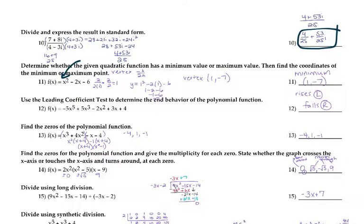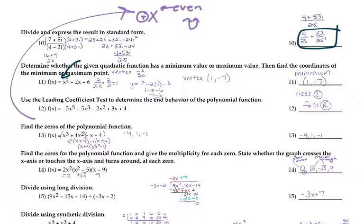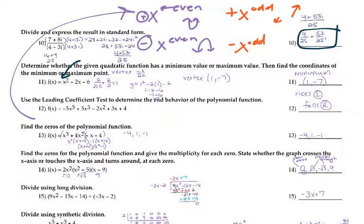For the leading coefficient test, look at the highest exponent. If the exponent is even and positive, both ends point up. If negative and even, both point down. If positive and odd, it rises right and falls left. If negative and odd, it rises left and falls right. In this case, negative x to the 5th is the highest term — 5 is odd and negative, so it goes up to the left and down to the right.